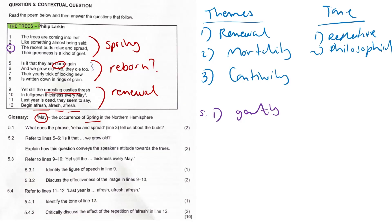5.2: Lines five and six, explain how this question conveys the speaker's attitude towards the trees. This rhetorical question shows the speaker's wonder and envy toward the trees. He marvels at how they seem to renew themselves each year while humans age and decline. This juxtaposition reveals both admiration and personal reflection on the difference between human life and nature's cycles.